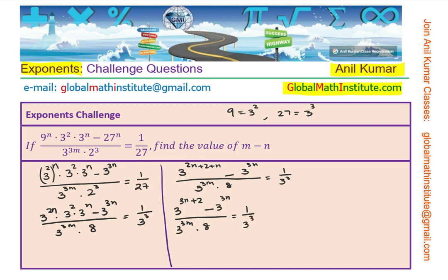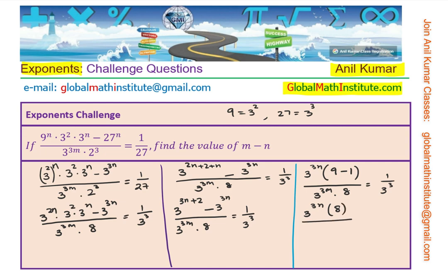Now 3 to the power of 3n is common in the numerator, so we can take that as common. In the numerator I can write 3 to the power of 3n, and when I take that as common, the remaining factor is 3 to the power of 2, which is 9, minus 1. The denominator we have 3 to the power of 3n times 8, equals 1 over 3 cubed. So we get 3 to the power of 3n times 8 over 3 to the power of 3n times 8, equals 1 over 3 cubed.